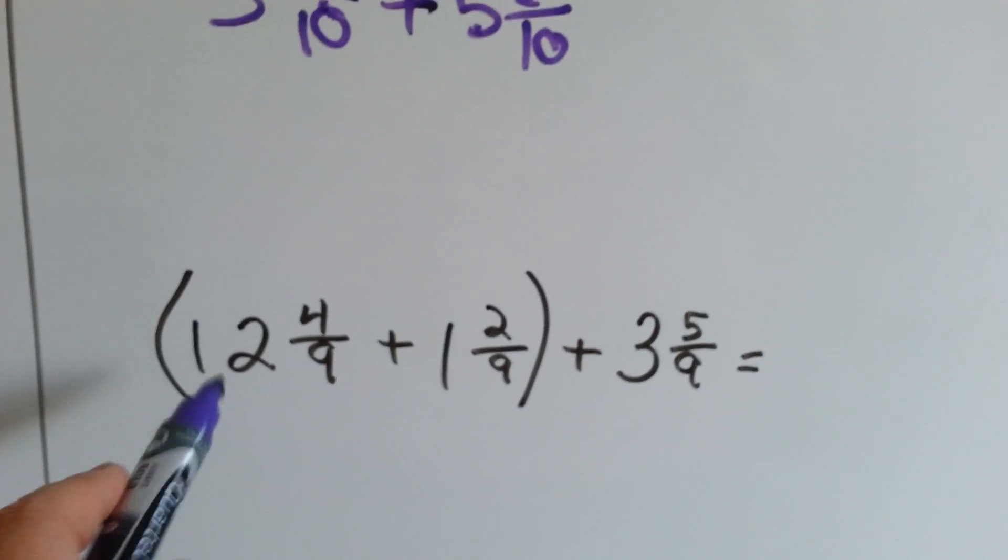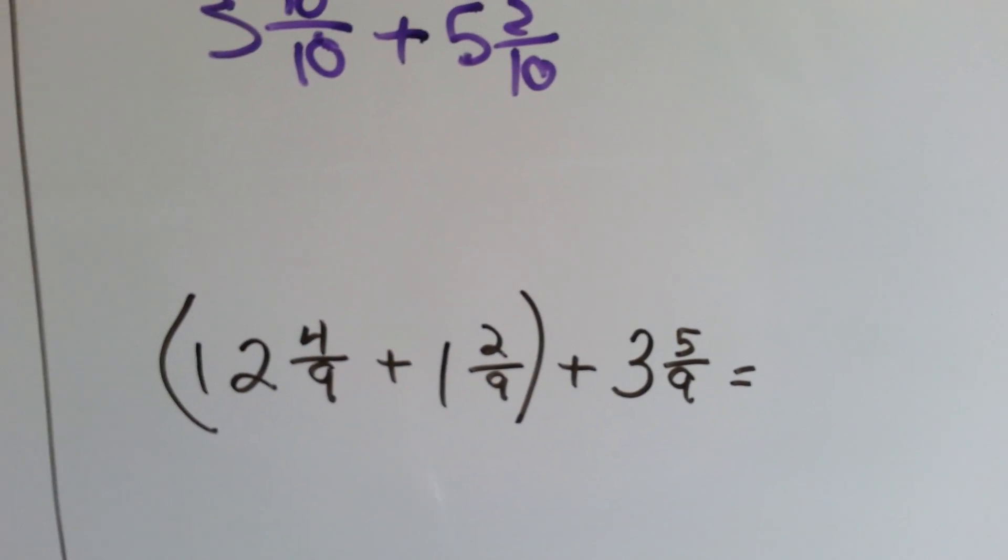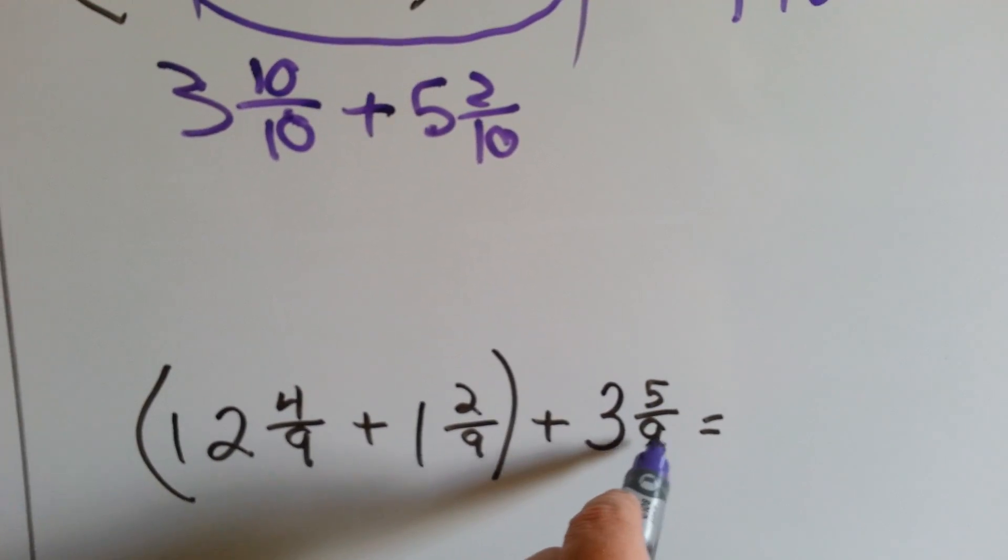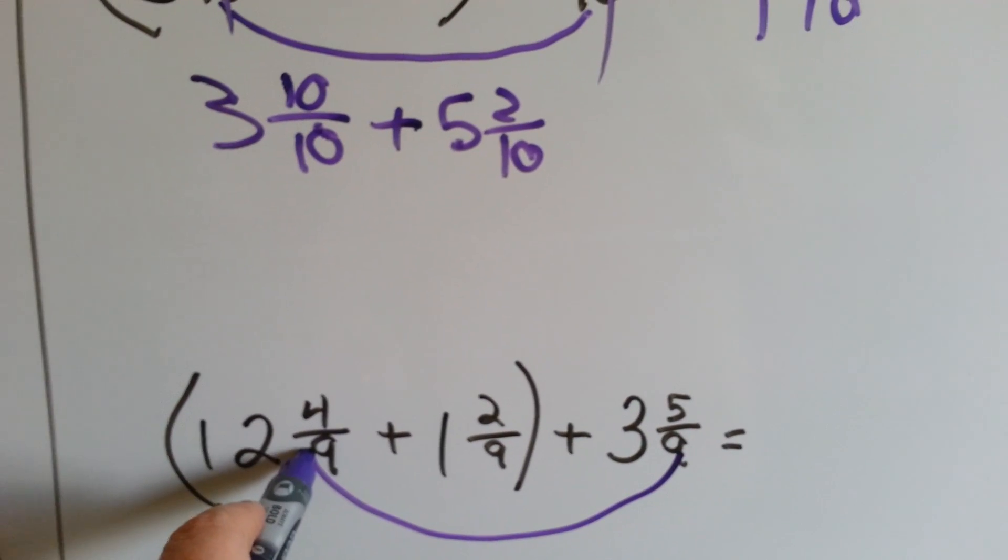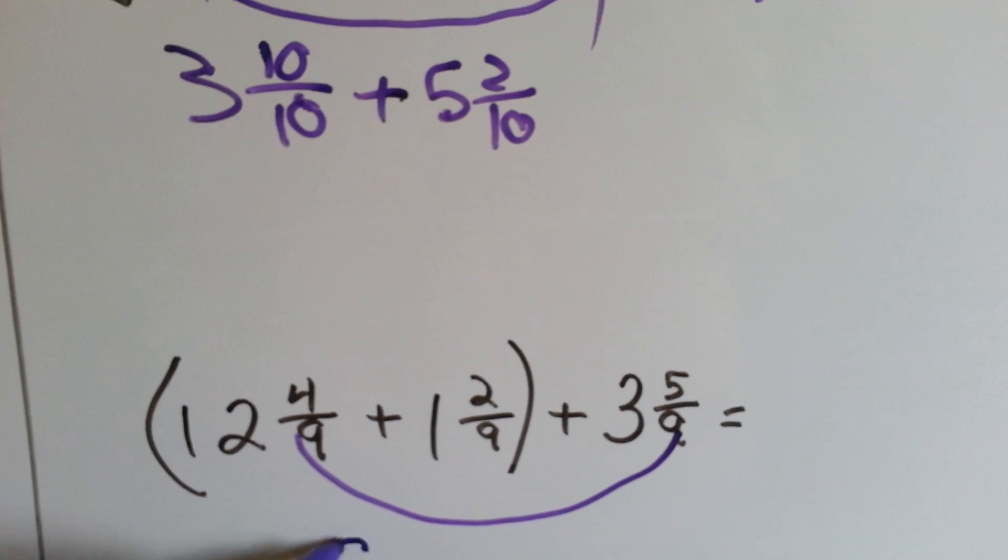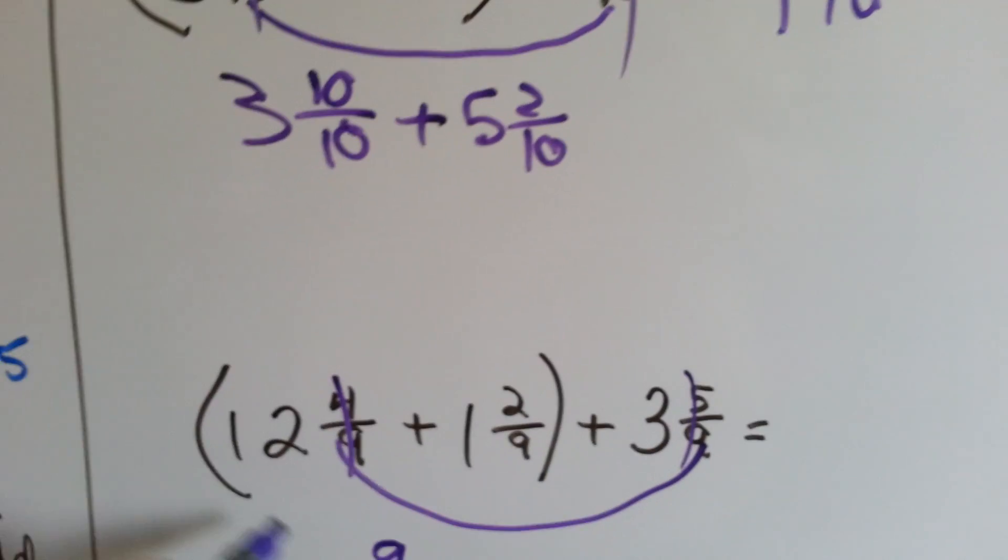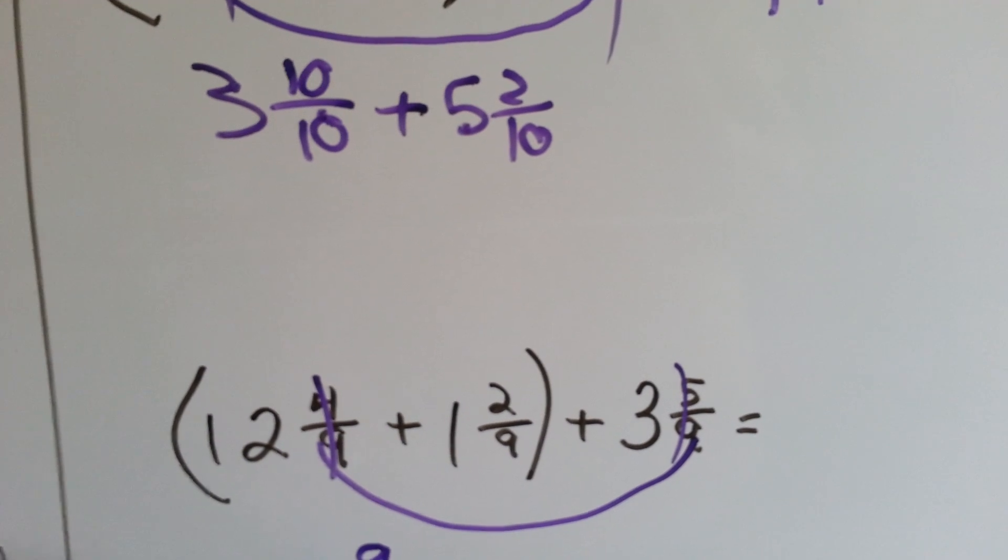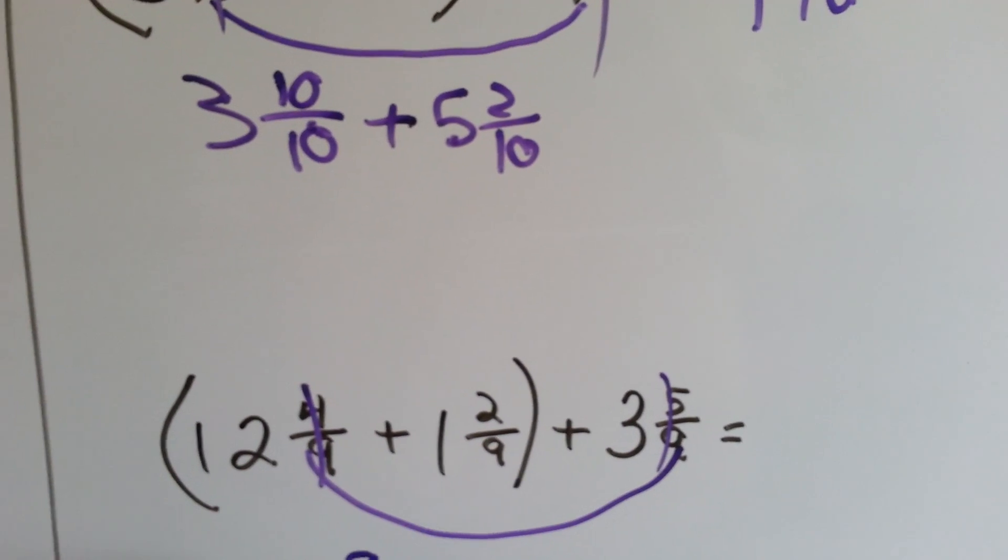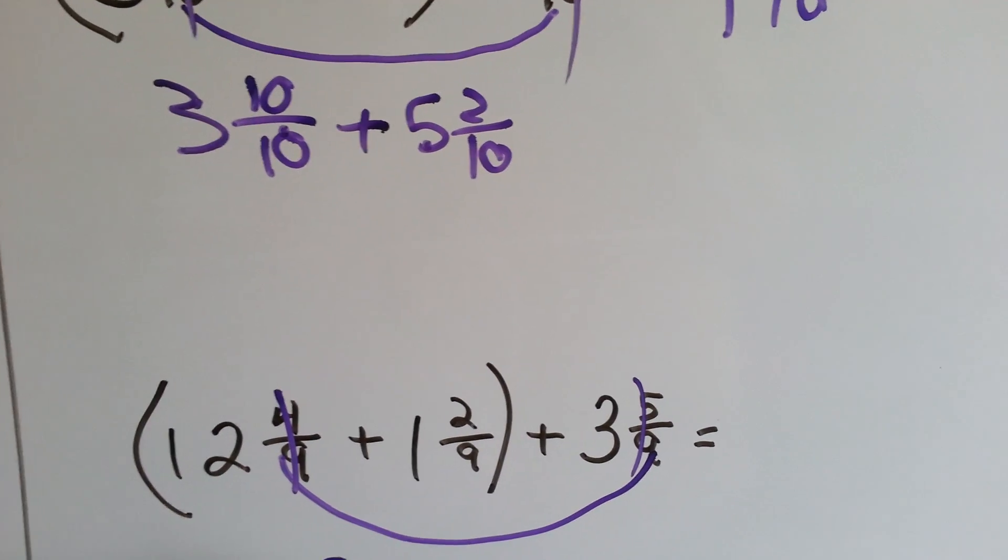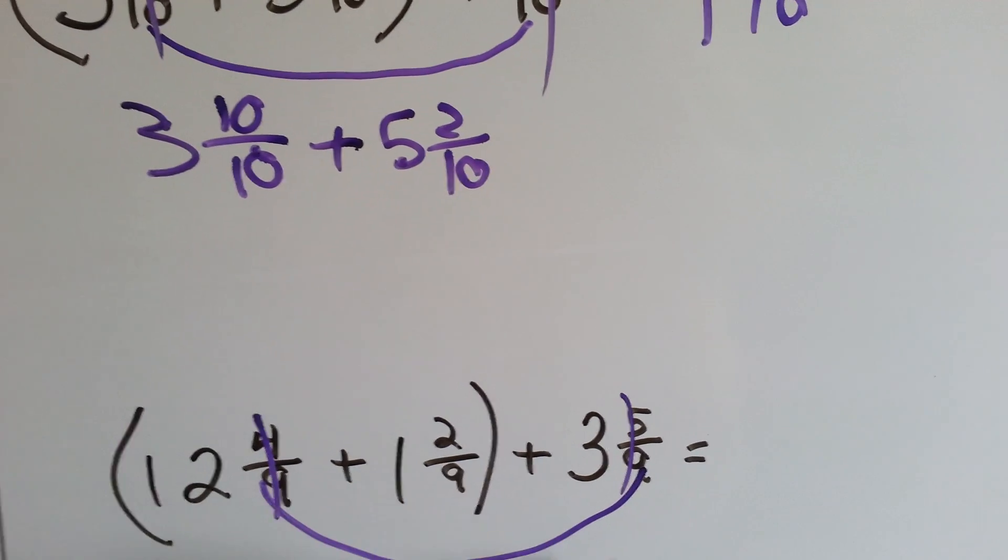How about here? Are they grouped the best way possible? We have a 12 and 4 ninths, but we have a 3 and 5 ninths over here. If we added these two together, wouldn't we get a 9 ninths? Yeah. So now we've got 12 and we've got 3 and 1 plus 1 more plus the 2 ninths.